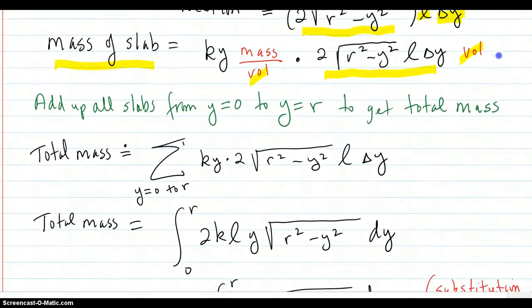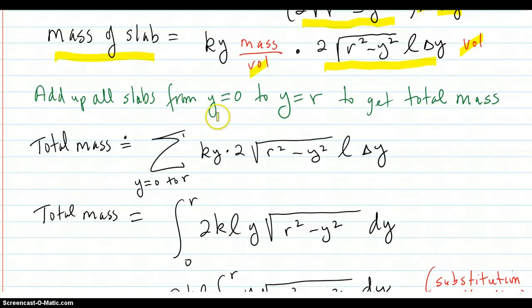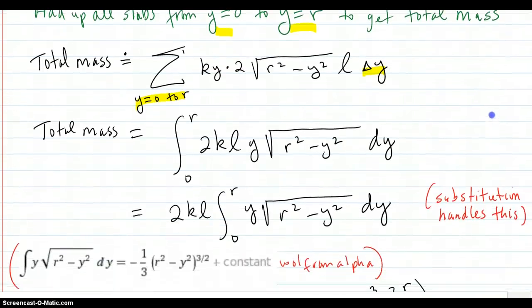Then you want to add up all those slabs from Y equals zero to Y equals R. Here we have our summation notation with the delta Y in there. That's the Riemann sum. And then the total mass, of course, will be the integral.